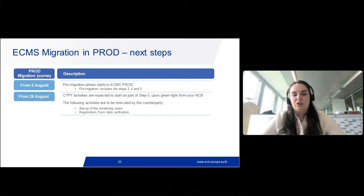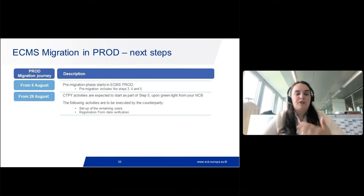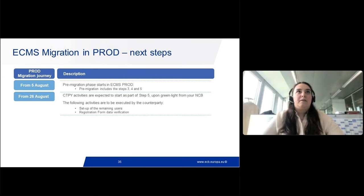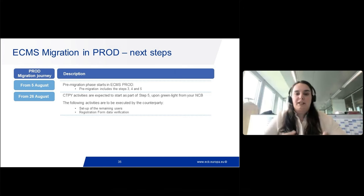So that covers the current status and updates. Regarding next steps: the pre-migration starts on the 5th of August and lasts until the 20th of September. It includes steps three, four, and five — all the creation of reference data. It's mostly an NCB and ECMS operator activity: creation of system parameters, setup of counterparty reference data, addresses and contact information from the registration form, and creation of accounts and pools.